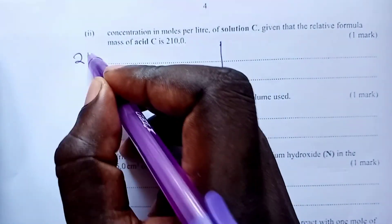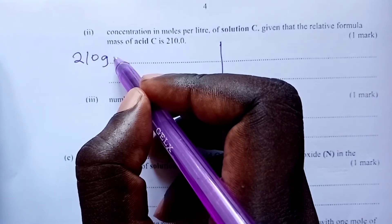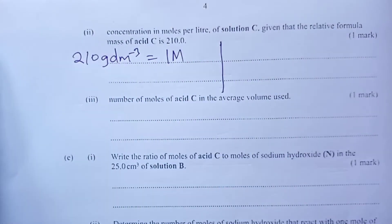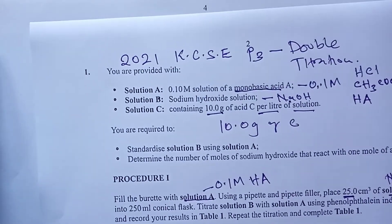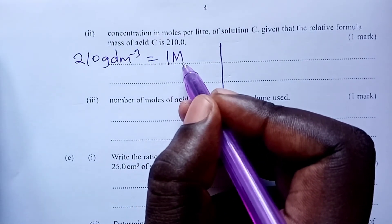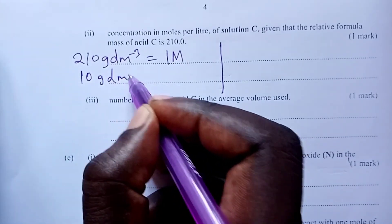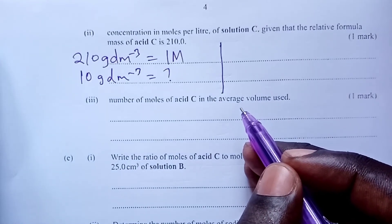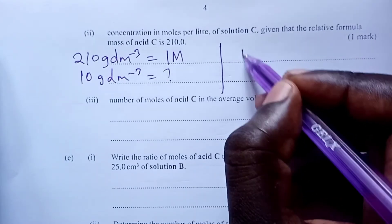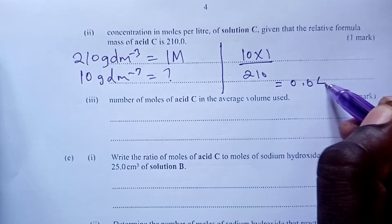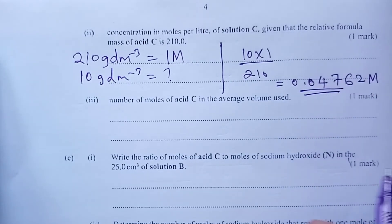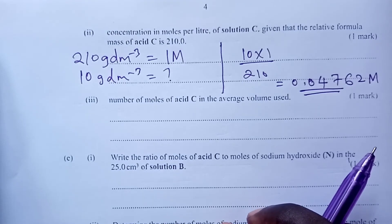So we have always said that 210, the relative formula mass expressed in grams and then in a liter of solution, that gives you a one molar solution. Now, if you look at what we were provided with, let me just show you once again, our solution C, we are told, contained 10 grams per liter. So 210 grams per liter is one molar solution of C. But what we used only had 10 grams per liter. So how many moles would that be? And if you do a simple cross multiplication, you get 10 times 1 divided by 210. And our answer becomes 0.04762 molar solution of acid C. Good. We proceed.